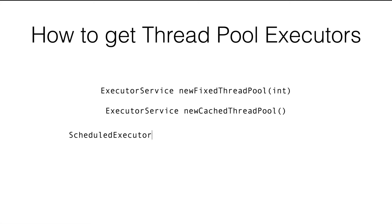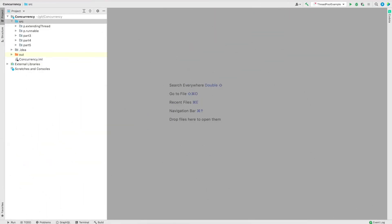The third method is newScheduledThreadPool. This method is used to get a scheduled executor service, which can be used to schedule a task at some point in the future and supports recurring tasks. To get a scheduled executor service that manages more than one thread, we use newScheduledThreadPool and pass an integer specifying how many threads it will manage. Now let's jump into IntelliJ to look at the examples.